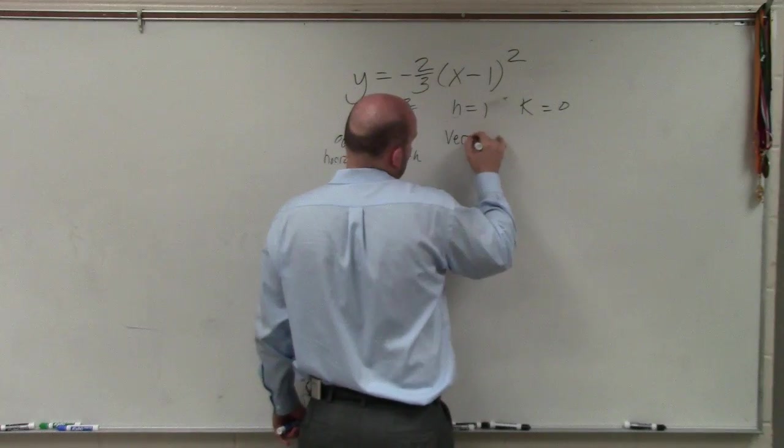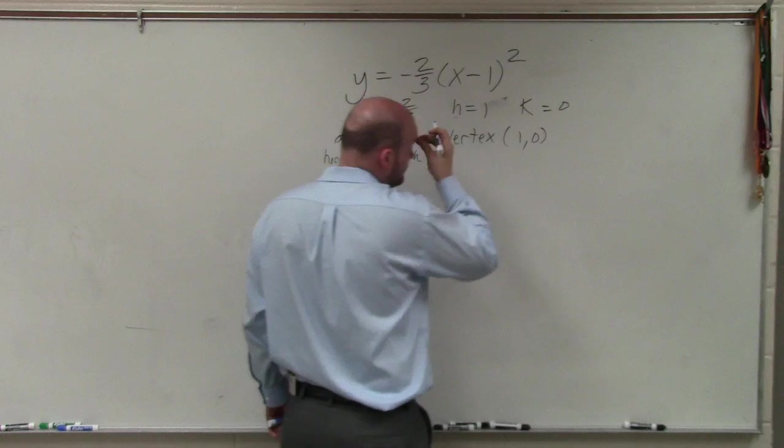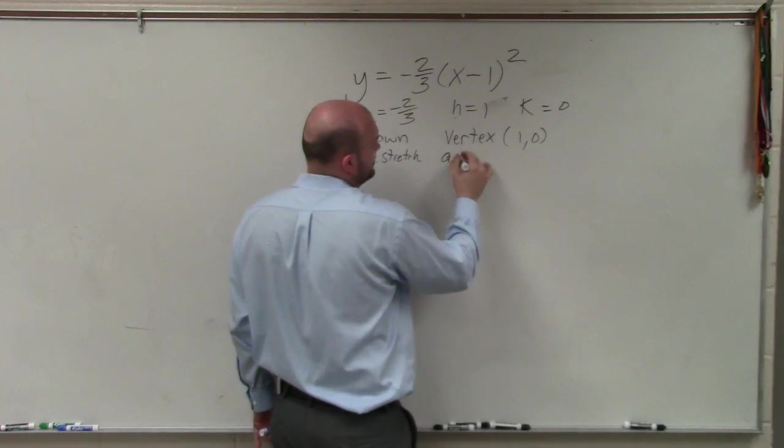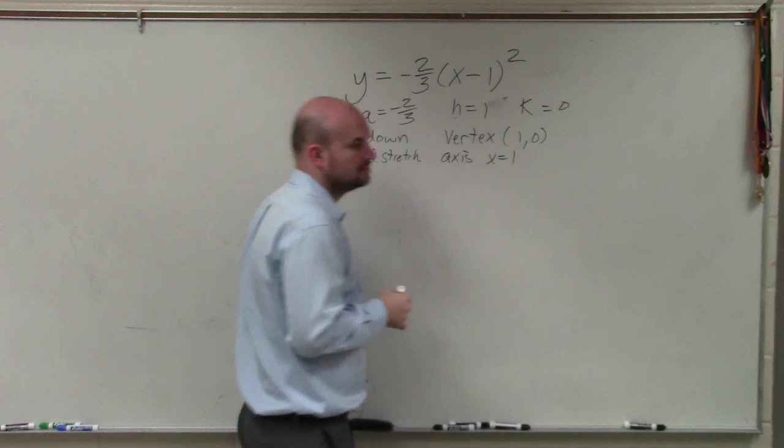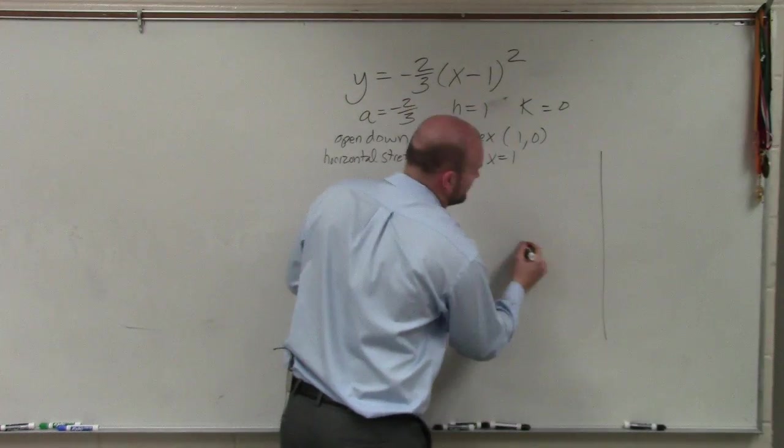So we know the vertex. Vertex, in this case, is going to be (h,k), which is (1,0). You could write the axis of symmetry is x equals 1, x equals h, which is just 1 here. So let's go ahead and graph what we know so far.